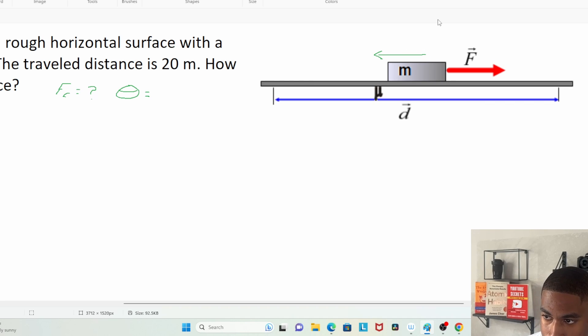The frictional force is going this way, pointing to the left, because it's trying to slow this mass down. And then we have the distance which starts here and ends here, and that distance is 20 meters. We can see that it travels this way to the right.